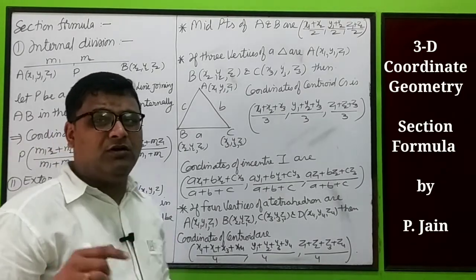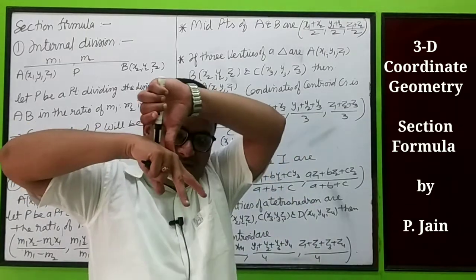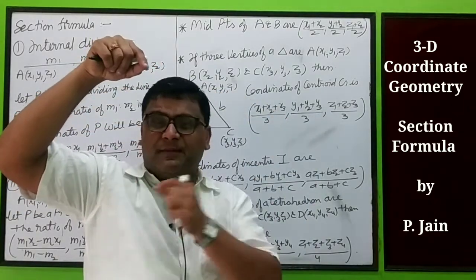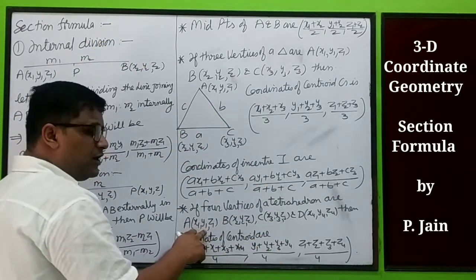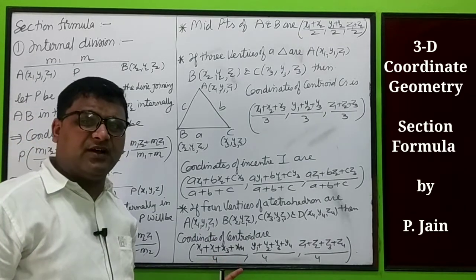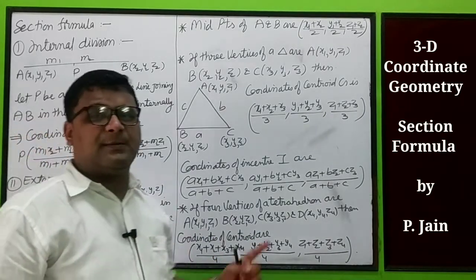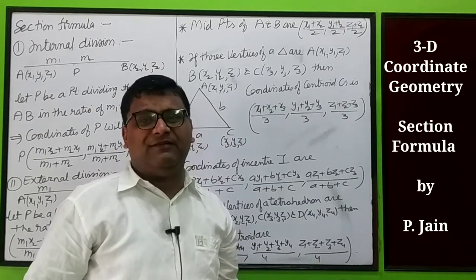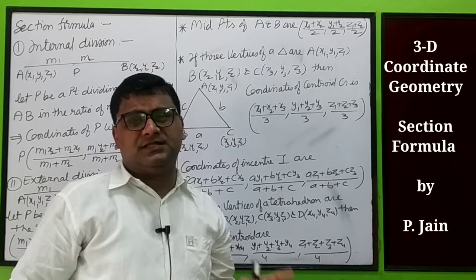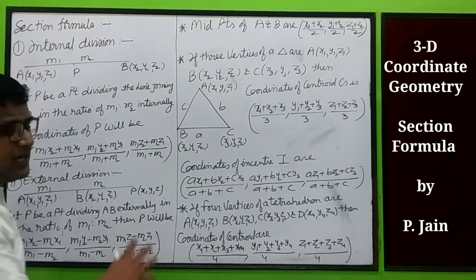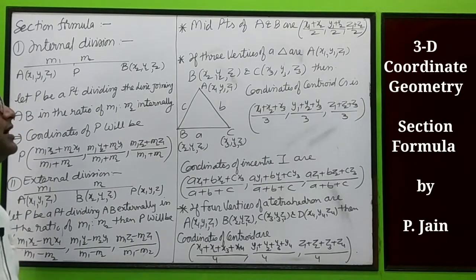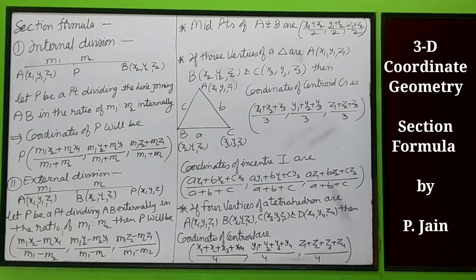A tetrahedron — we know the tetrahedral structure, like that of methane. If the four vertices of a tetrahedron are A(x1,y1,z1), B(x2,y2,z2), C(x3,y3,z3), and D(x4,y4,z4), then the coordinates of the centroid of the tetrahedron will be ((x1+x2+x3+x4)/4, (y1+y2+y3+y4)/4, (z1+z2+z3+z4)/4). So these are the basic formulas for internal division, external division, midpoint, centroid of a triangle, and centroid of a tetrahedron.